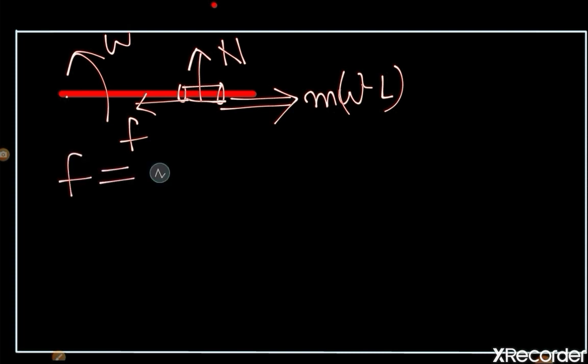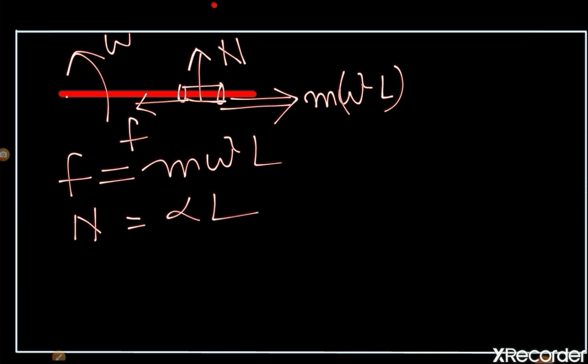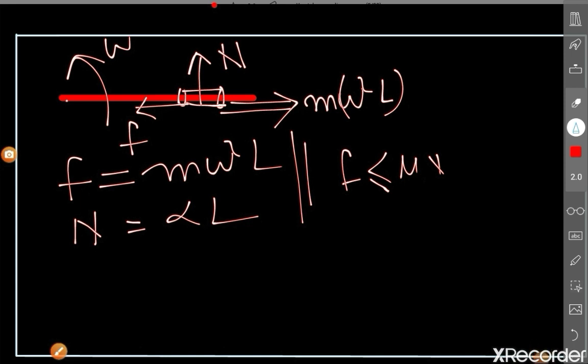In the rod reference frame: f = mω²L and N = mαL — the same equations as before. The difference is that in the ground frame, friction provides the necessary centripetal acceleration, while in the rod frame, friction balances the centrifugal pseudo-force. After that, the method is the same: applying f ≤ μN leads to the same final answer.